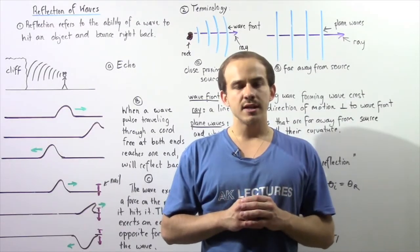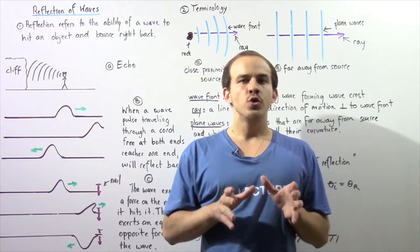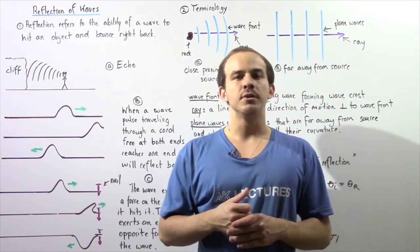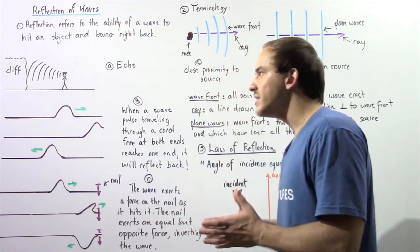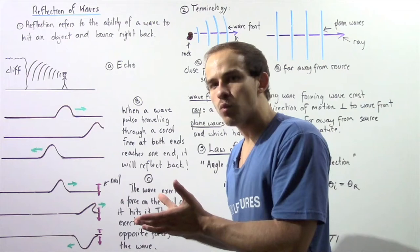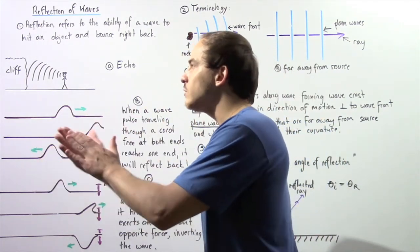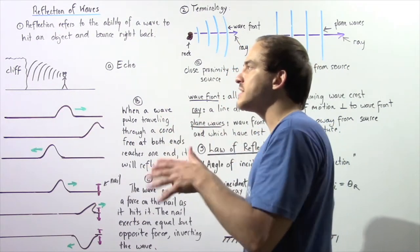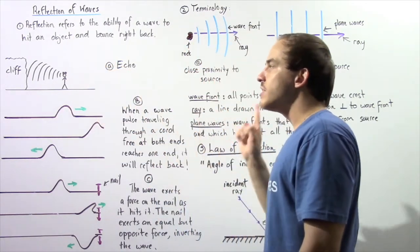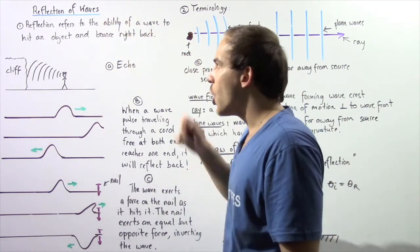Let us discuss another important concept that deals with waves, known as reflection. Reflection is essentially the ability of waves to hit other objects and bounce back and travel in the opposite direction. A very common example of reflection is an echo. A person standing by a large cliff who yells directly at it creates a sound wave — a spherical mechanical wave that propagates towards the cliff. When it reaches the cliff, it bounces back, and the person hears that same sound wave they produced. This is known as an echo, formed because of reflection.